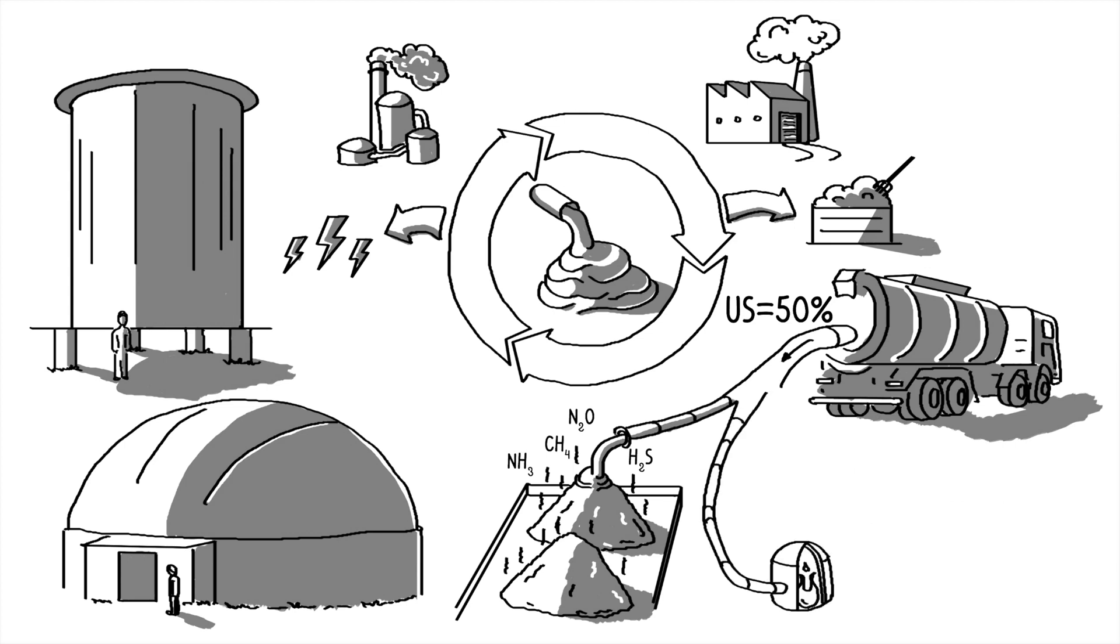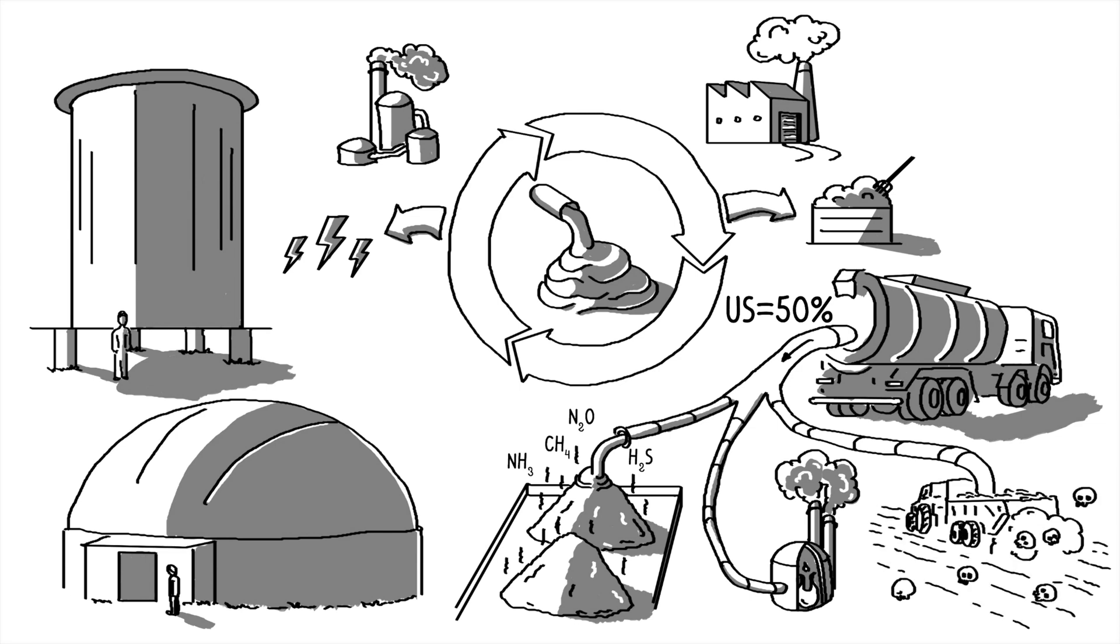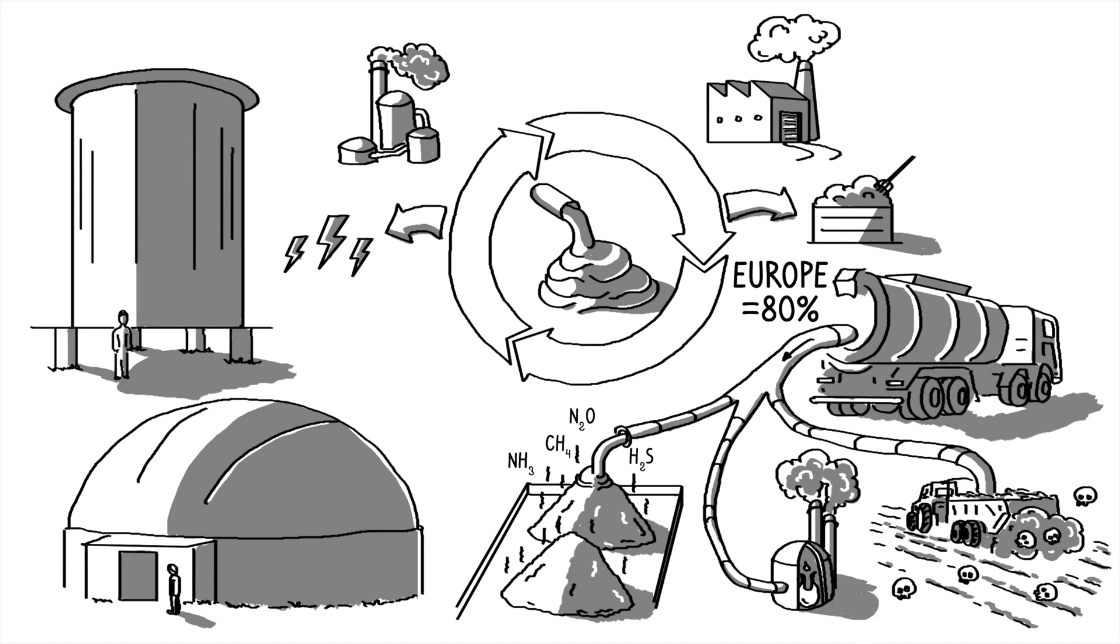Or it's incinerated, generating more greenhouse gases. Or it's spread over farmland, potentially contaminating soils and crops with pathogens and antibiotic-resistant bacterial strains. In Europe, up to 80% of sludge is dumped in landfills or fields, or incinerated.